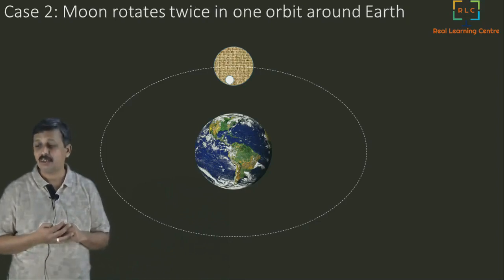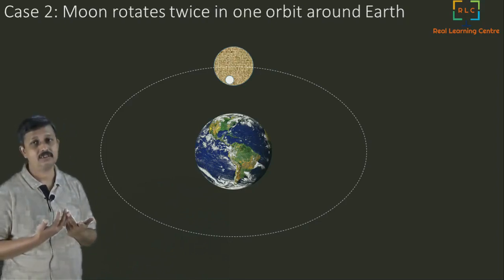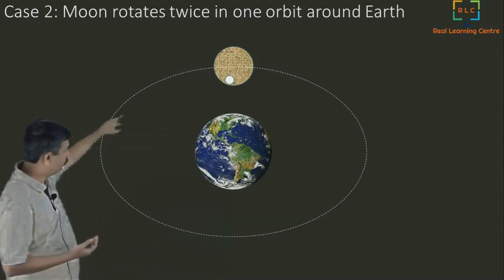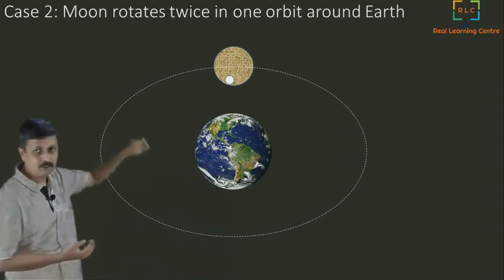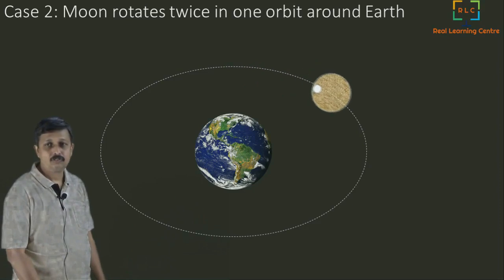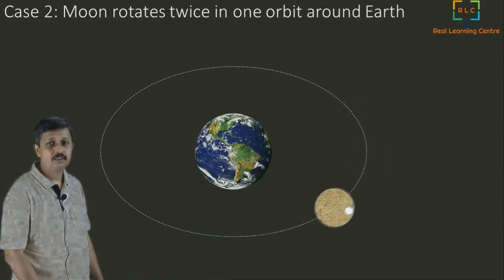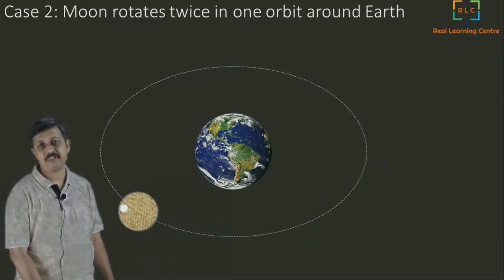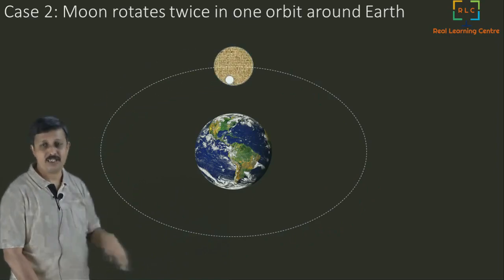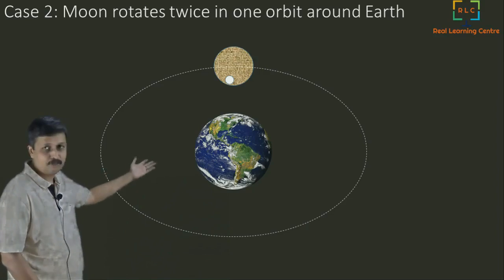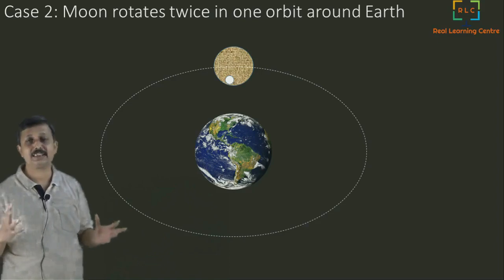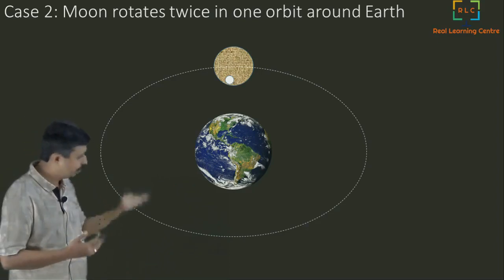Case two: the moon rotates twice around its own axis during one orbit around the Earth. Watching carefully — one rotation on its axis, then a second rotation. Even here, after the first full rotation we would see the other side of the moon. Since this theory also demands that we see the other side, this theory is also wrong.